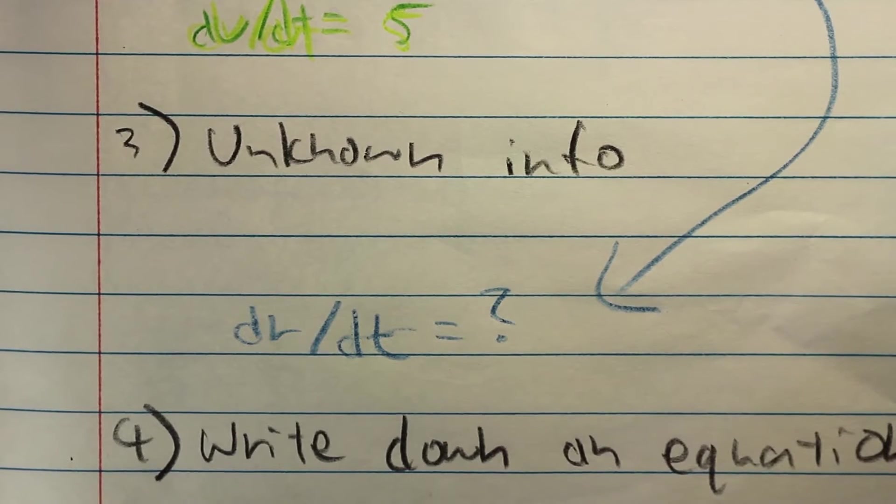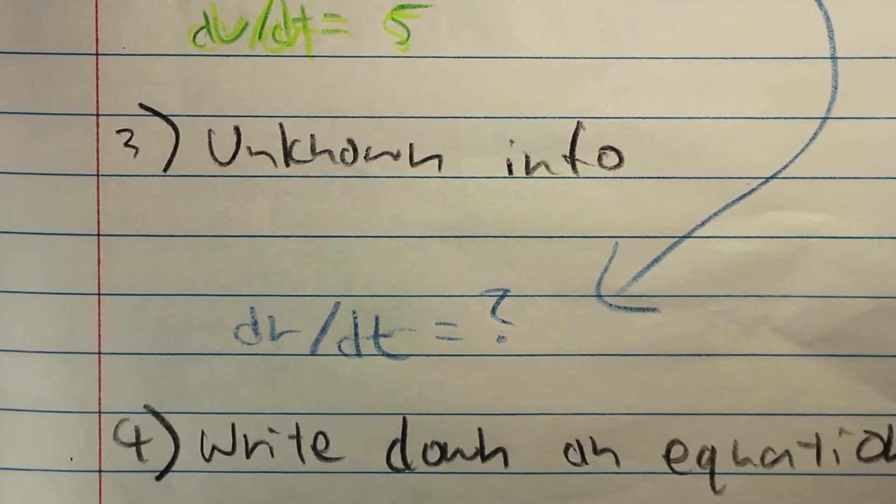After that, we need to define what the unknown information is. In this situation, we are looking for the rate at which the radius is changing, so that is defined as dr/dt.